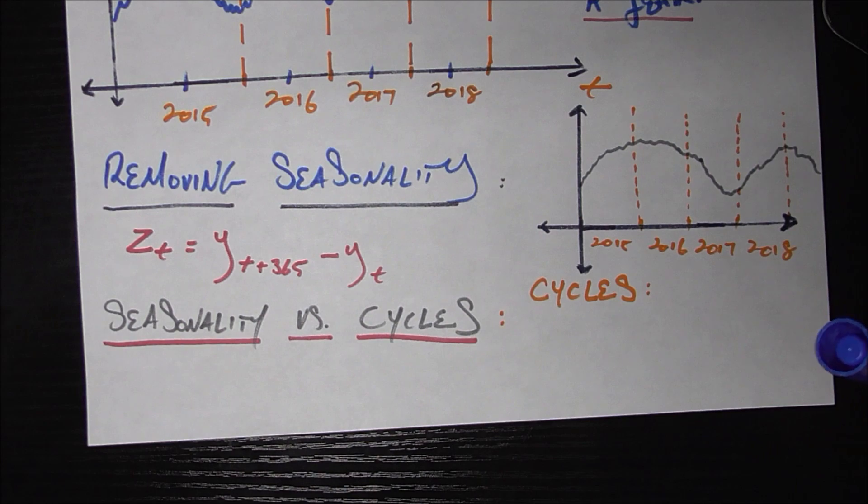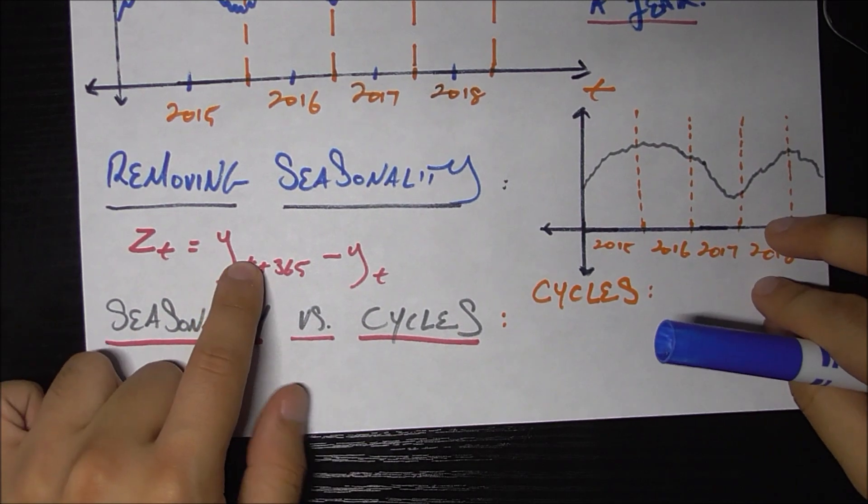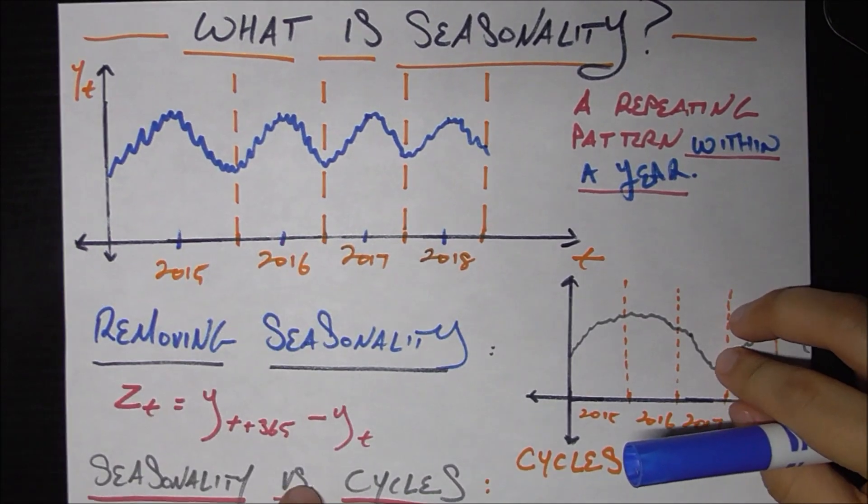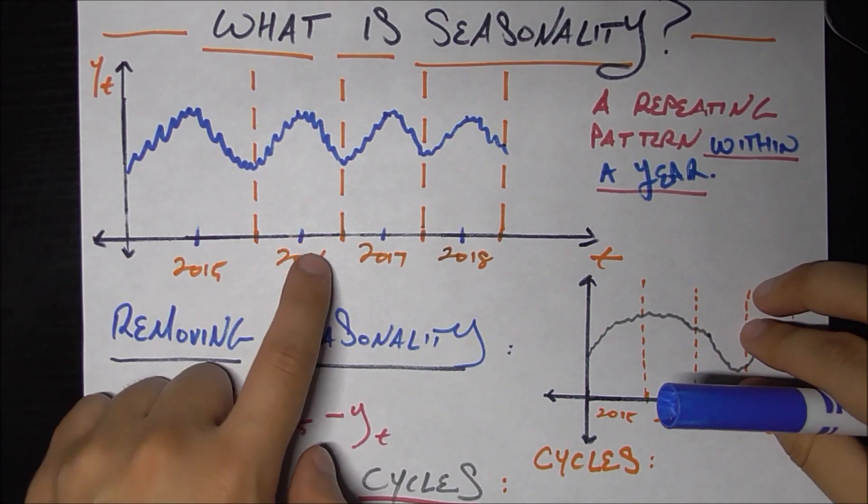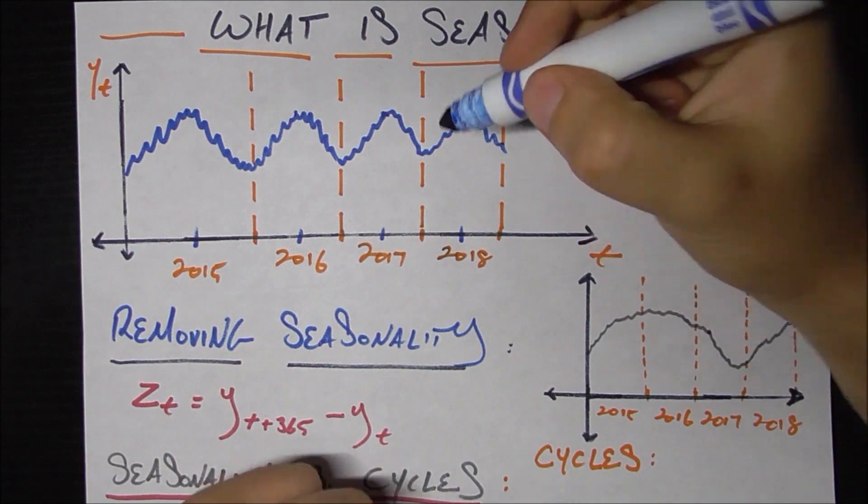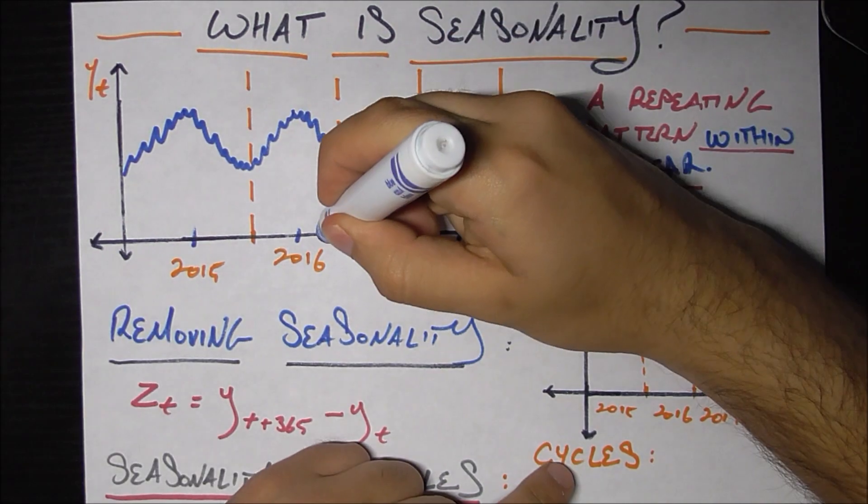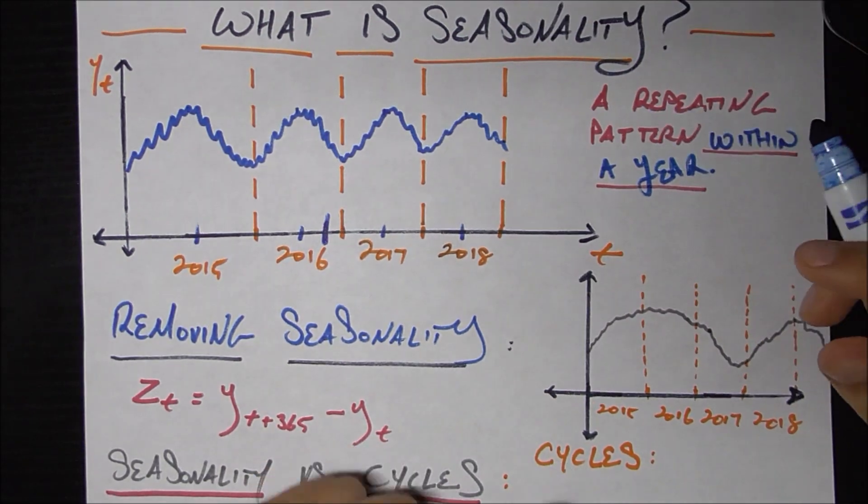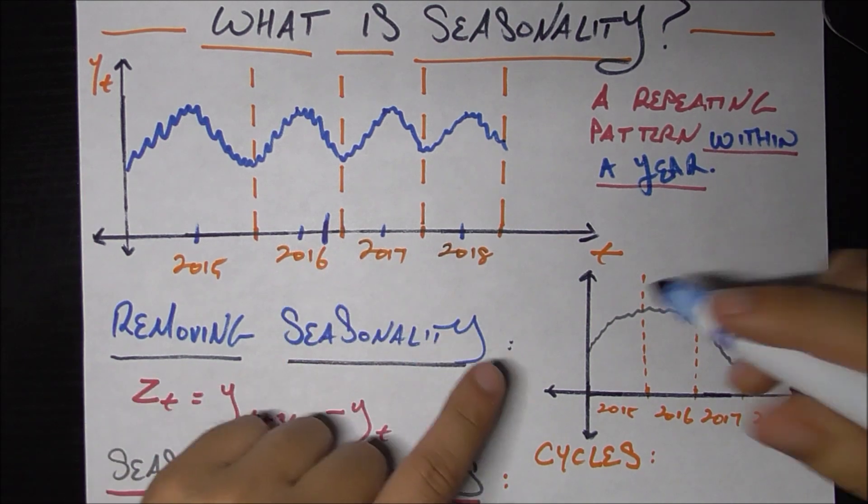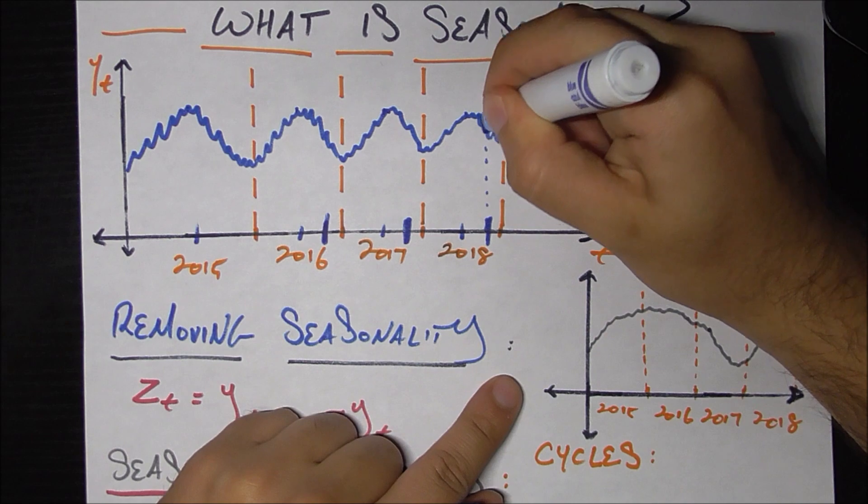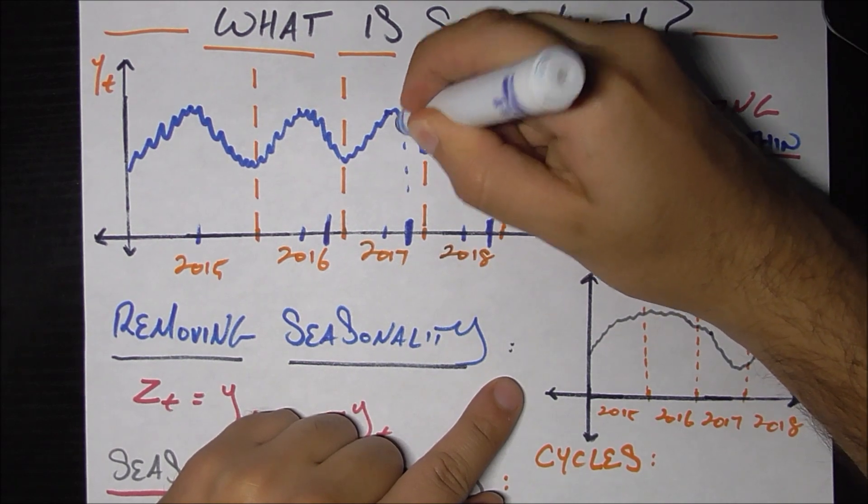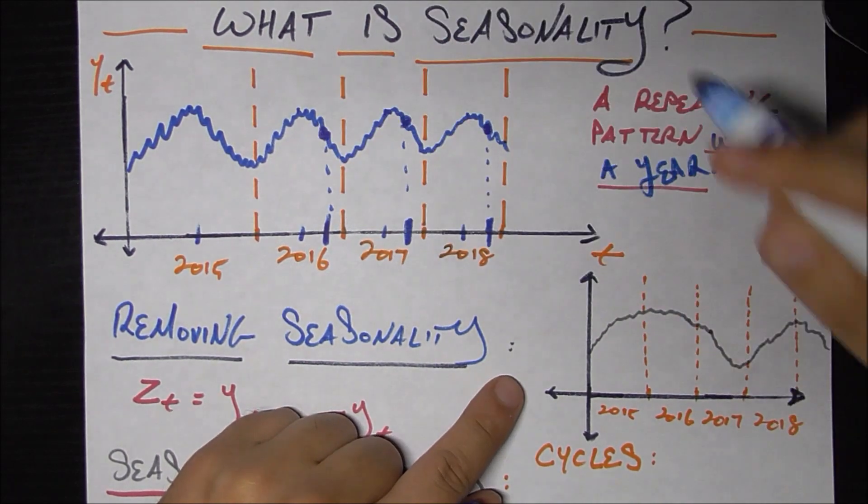It turns out removing seasonality, there's a lot of ways to do it. Here's a very basic way that ties into this chart right here. What do we know about this chart? We know that within each year, if we were to take any arbitrary day within a year, let's say I take the 300th day of the year, which would be around there, right? Almost at the end of the year. If I take the 300th day of 2017, 300th day of 2018, I'm expecting them to kind of have the same value because of the definition of seasonality, because there is that repeating pattern.